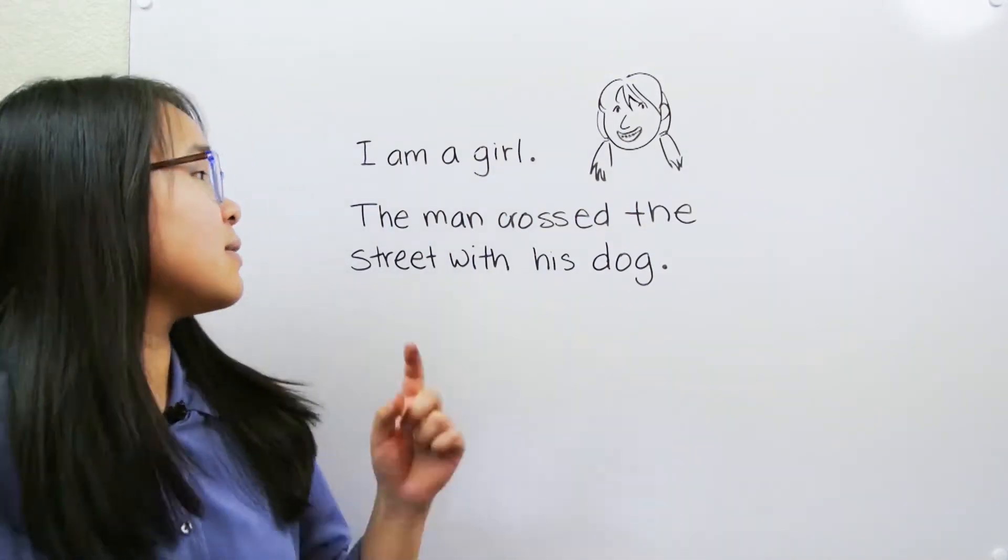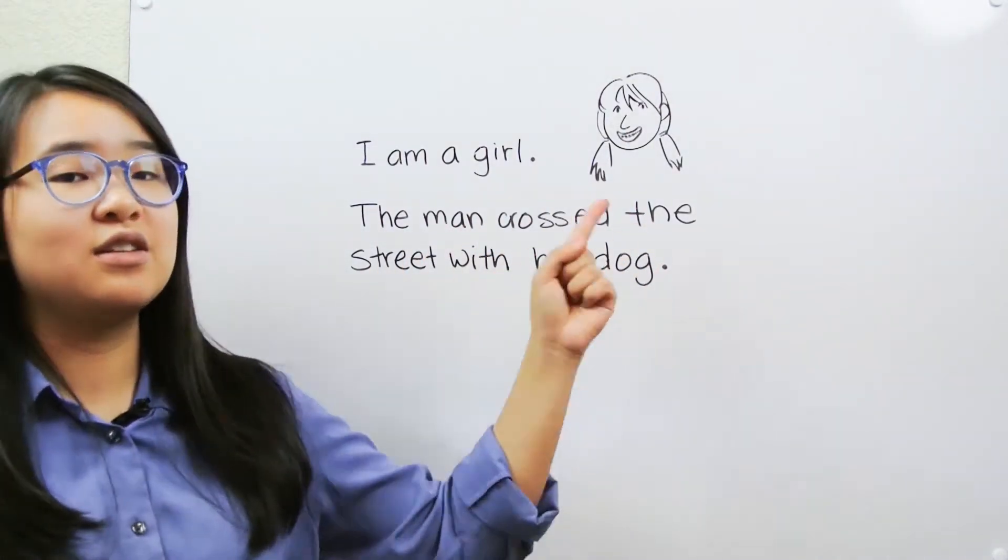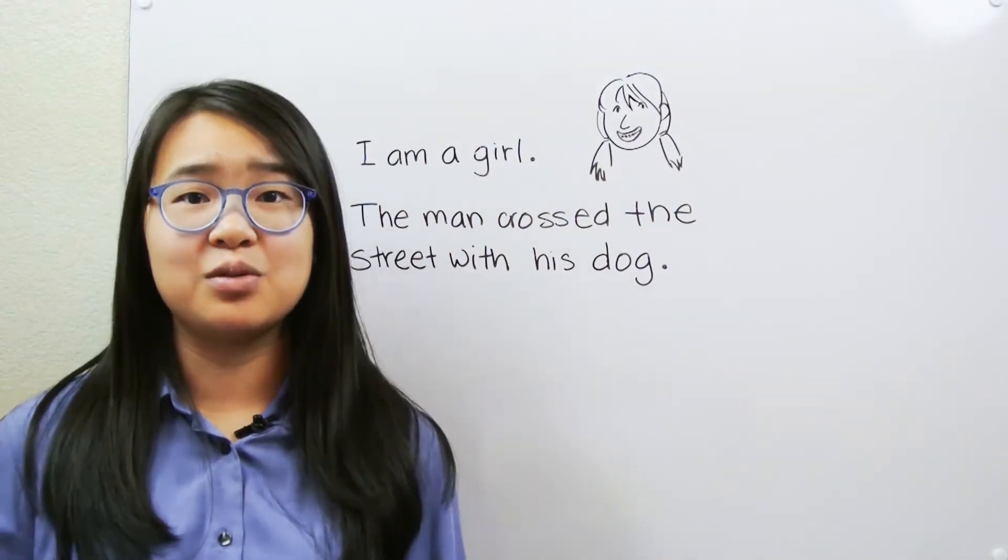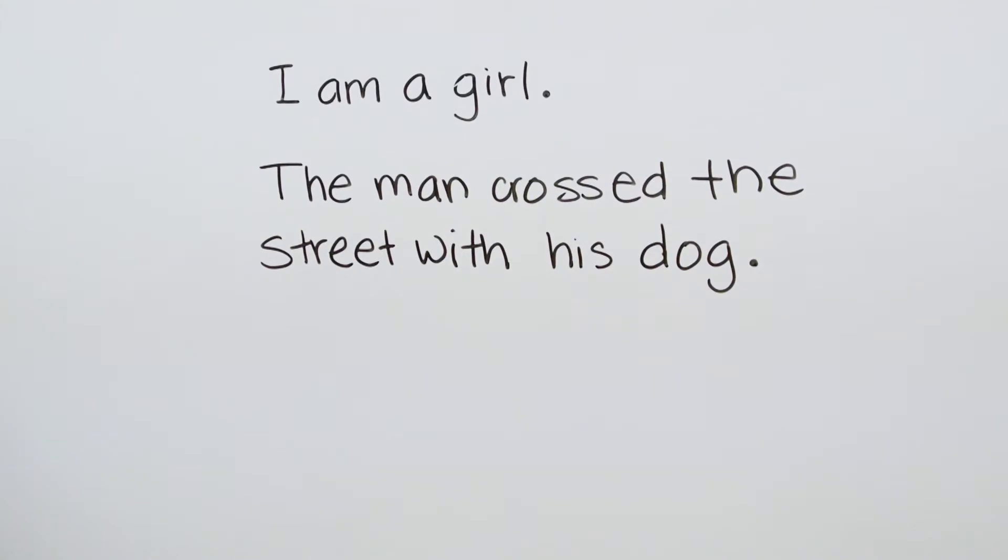Another example is, the man crossed the street with his dog. This is a statement about what the man and the dog are doing. The type of punctuation used at the end of a statement is called a period.